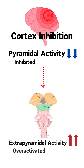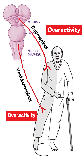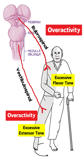Now, what happens when the cortex is disinhibited? We see an overactivity of the rubrospinal and the vestibulospinal pathways. As a result, the efferent motor discharges from these two pathways remain unregulated, and because of this we see excessive contractions in the target muscles.